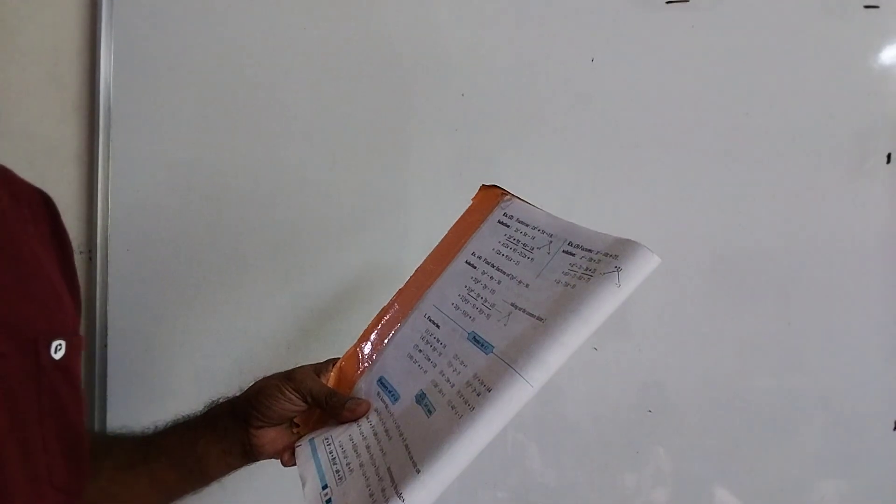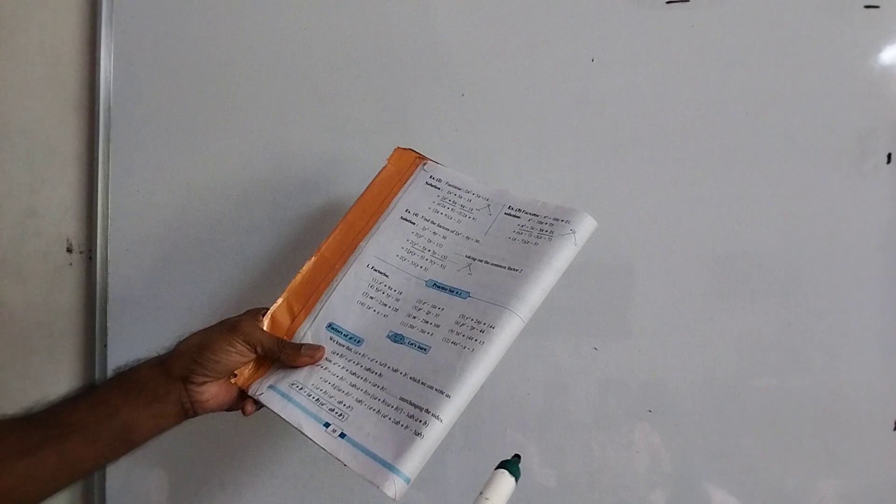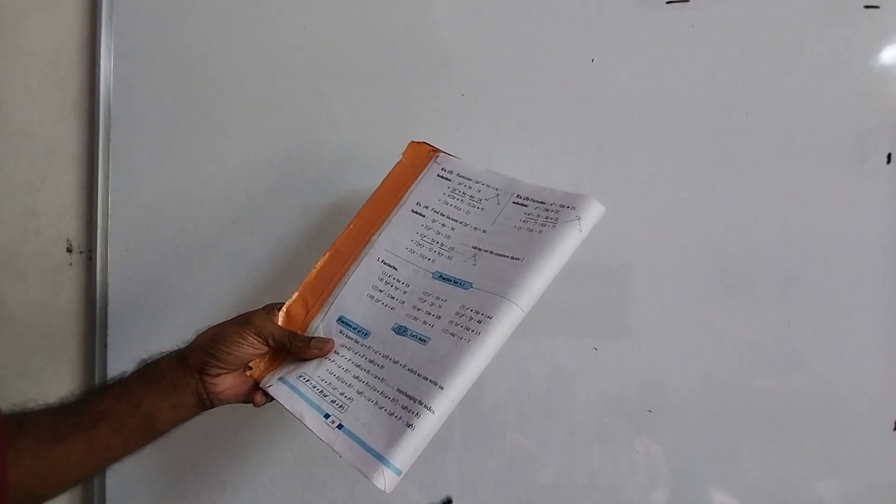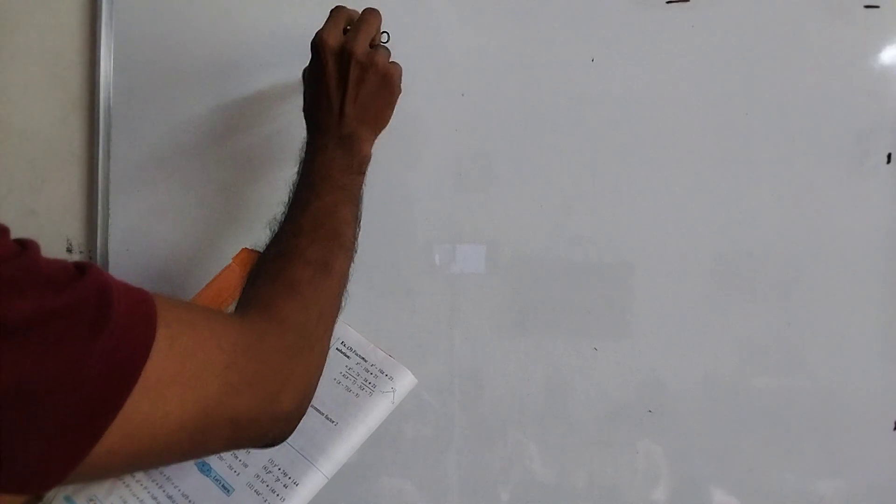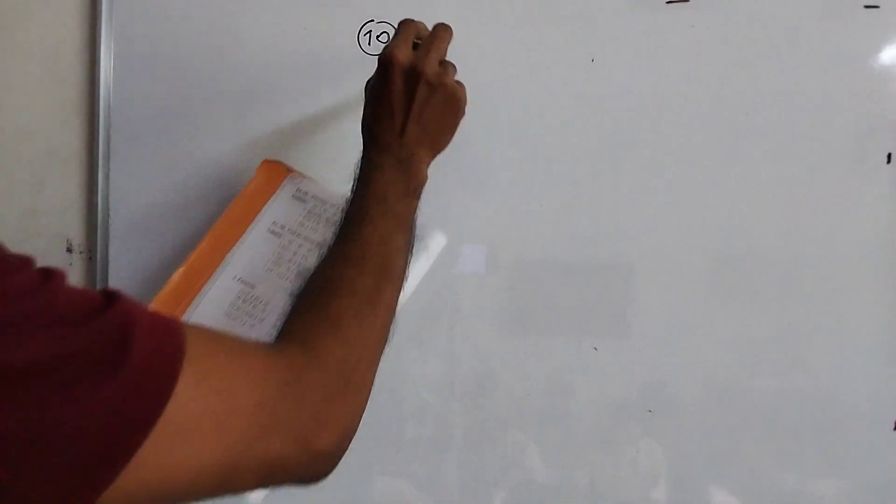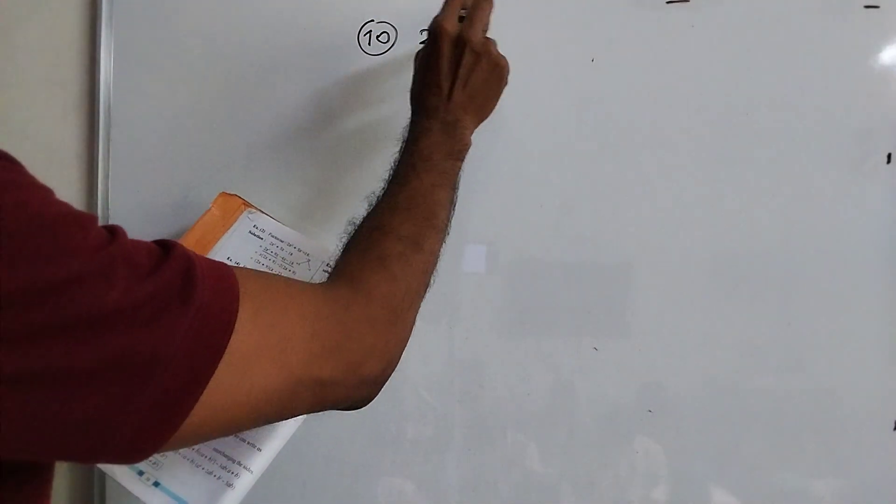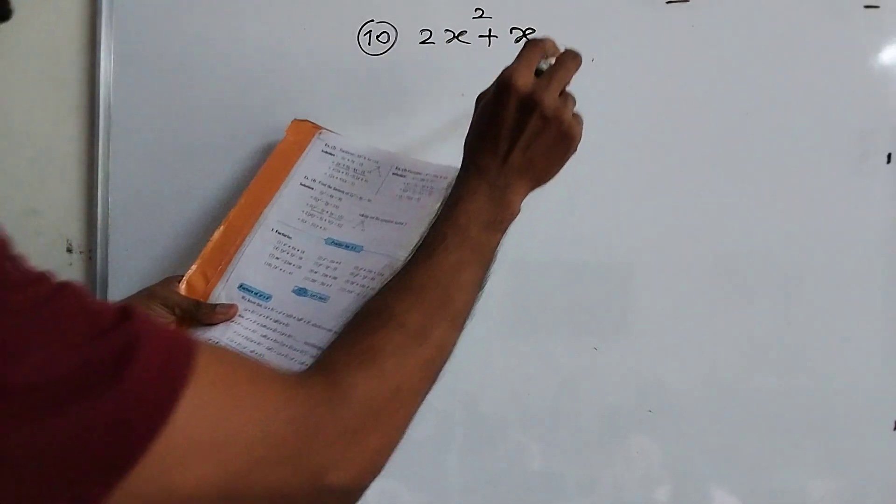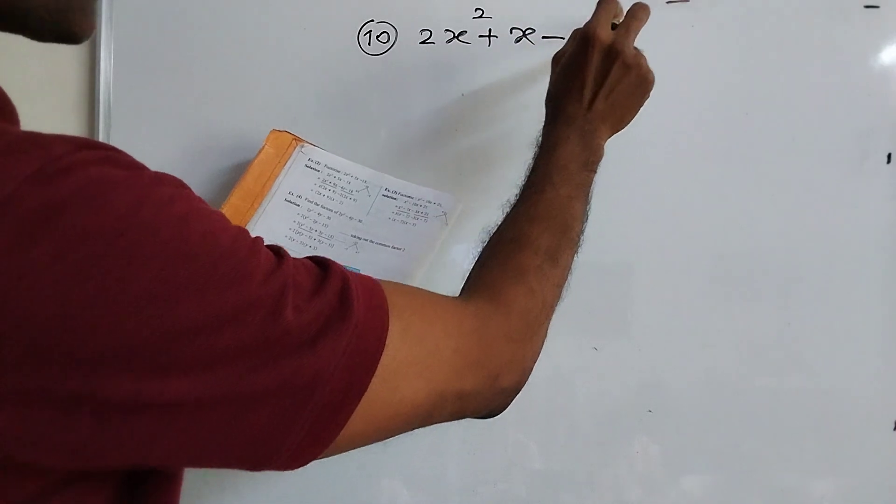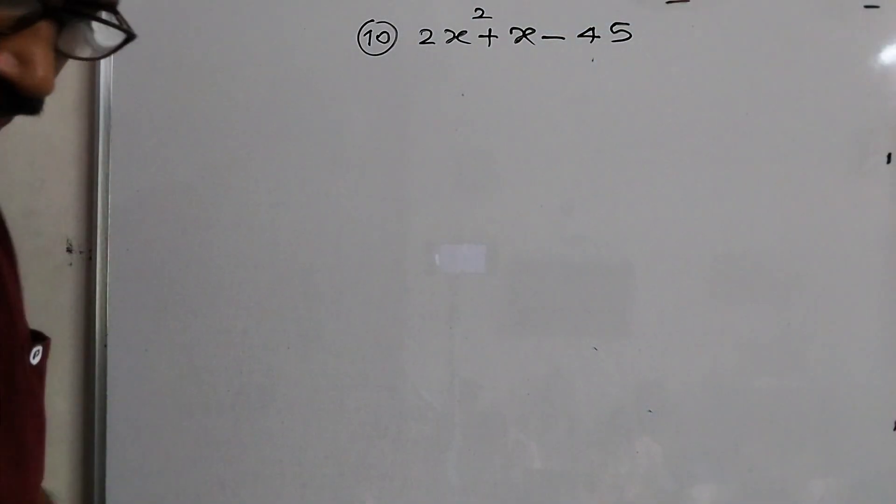Factorization of algebraic expressions. Practice set 6.1. Factorize the following. Example number 10. See here. 2x square plus x minus 45. Okay.